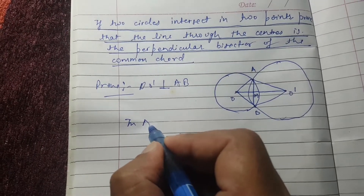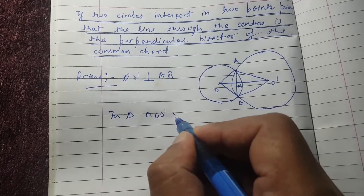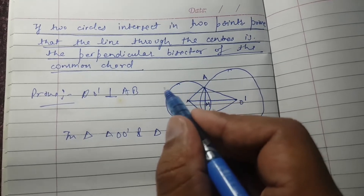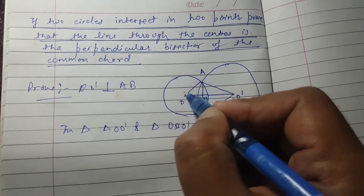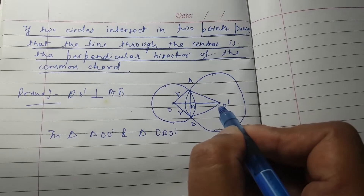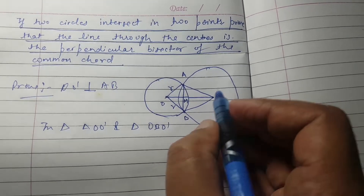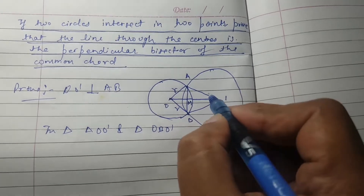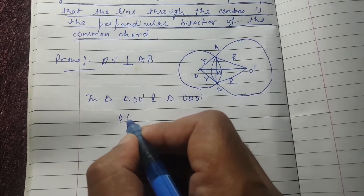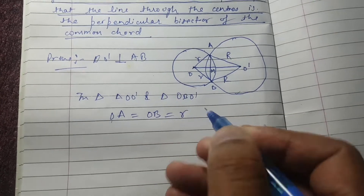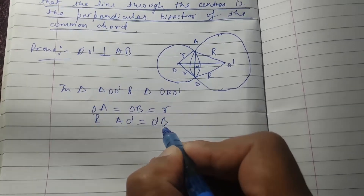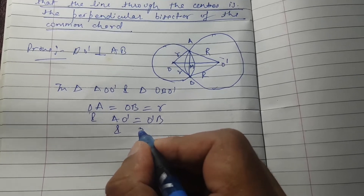Now we will consider triangle AOO' and triangle BOO'. Since this is our first circle, OA and OB are both radii of the smaller circle — call it radius r. O'A and O'B are both radii of the larger circle — call it radius R. And OO' is the common side.